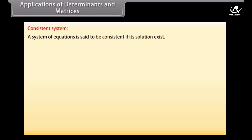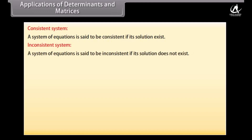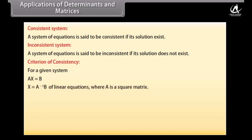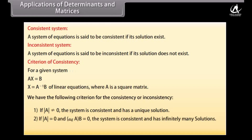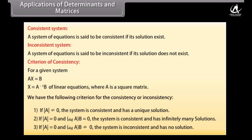Applications of Determinants and Matrices. Consistent system: A system of equations is said to be consistent if its solution exists. Inconsistent system: A system is inconsistent if its solution does not exist. Criterion of consistency: For AX = B, if det(A) ≠ 0, the system is consistent with a unique solution. If det(A) = 0 and adj(A)·B = 0, the system is consistent with infinitely many solutions. If det(A) = 0 and adj(A)·B ≠ 0, the system is inconsistent with no solution.